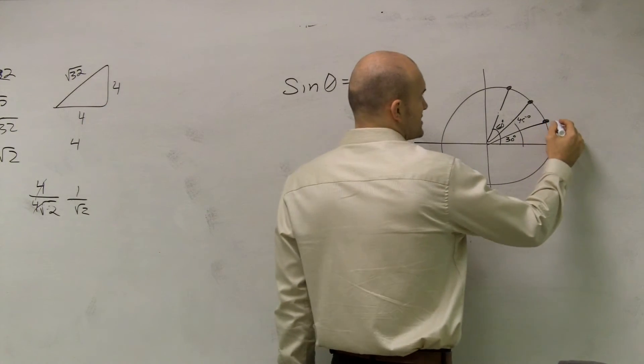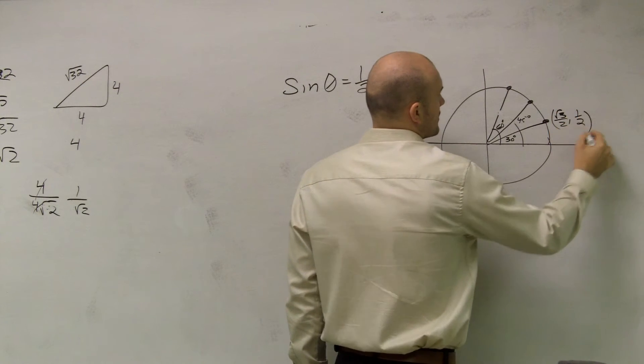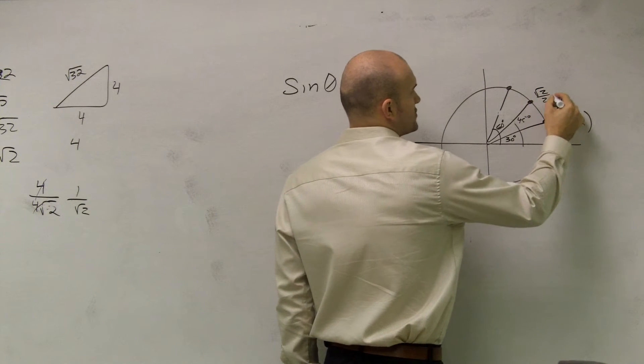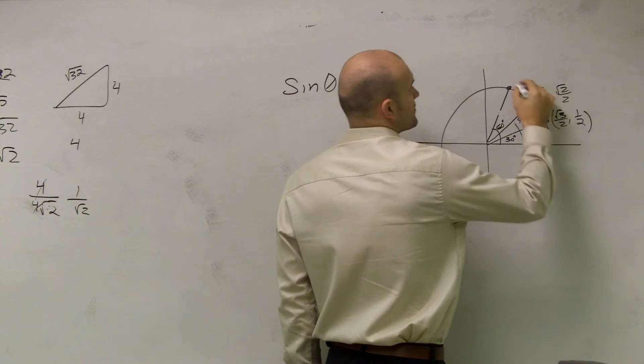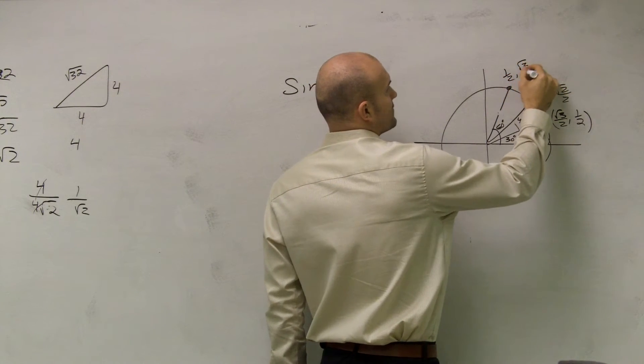So at 30 degrees, we have square root of 3 over 2 comma 1/2. 45 degrees is square root of 2 over 2 comma square root of 2 over 2. And for 60 degrees, it's 1/2 comma square root of 3 over 2.